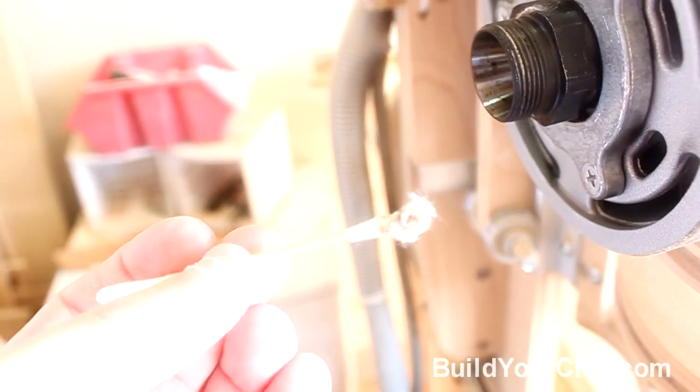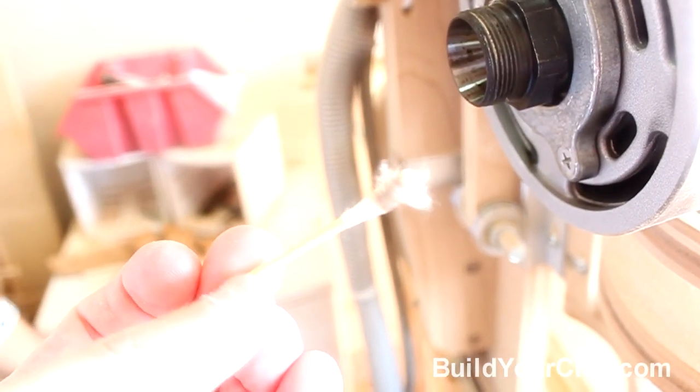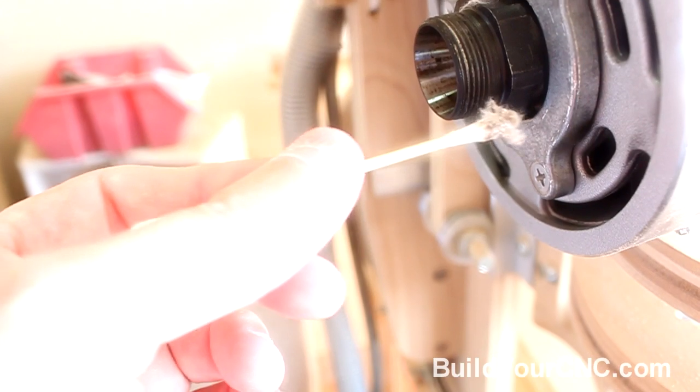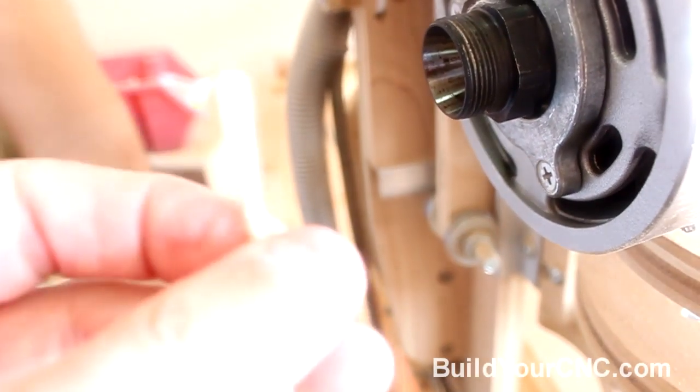You can see that it was pretty dirty inside but you want to keep doing this process until you have a clean q-tip where it would look something like this but maybe a little tiny bit of discoloration. You want to go all the way in, draw it out with the solution and do that process over and over until you get it clean.